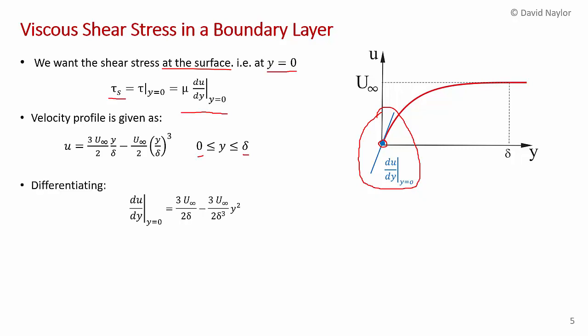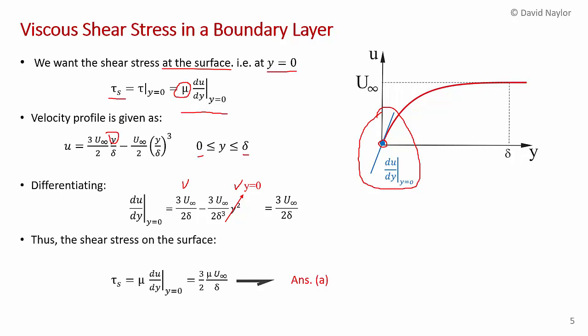Differentiating the velocity profile: du/dy = (3u∞)/(2δ) − (3u∞ y²)/(2δ³). Applying this at y = 0, the second term vanishes and we're left with du/dy = (3u∞)/(2δ). Multiplying by the dynamic viscosity gives τ_s = μ (du/dy)|_{y=0} = (3/2) μ u∞ / δ. This shear stress acts on the surface in the positive x direction. That is the answer to part a.